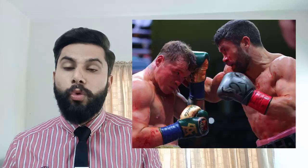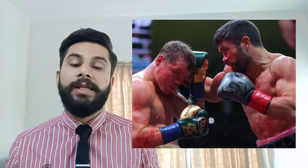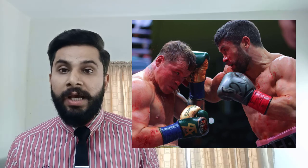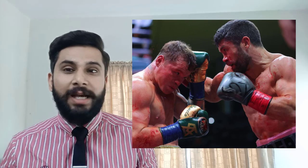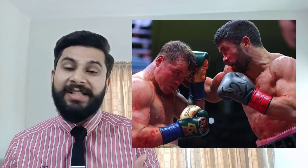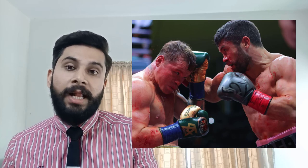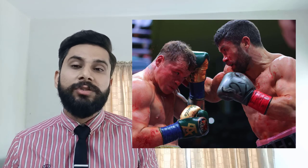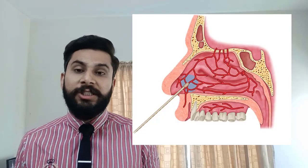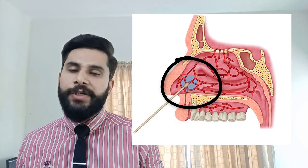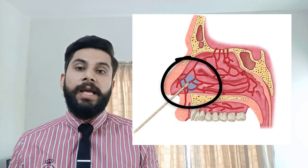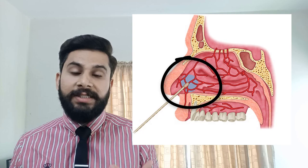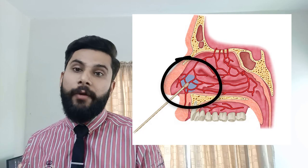We can suspect two things here. When Canelo Alvarez was hitting John Ryder's face, there was already some kind of deformity — some previous trauma or previous injury — already present around this portion, and that resulted in the continuous bleeding we saw in the fourth and fifth round. The vessels present in the nose are pretty fragile, and when there is repeated trauma, this can result in rupture of these vessels and bleeding through this area.